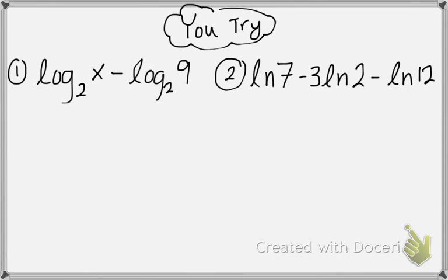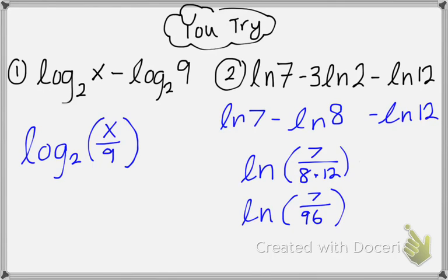Go ahead and pause the video and give these two problems a try — watch out for any coefficients before you condense. For number one, I used the quotient property and got log base 2 of x over 9. For number two, first you need to rewrite 3 natural log of 2 as natural log of 8. Then I can see that both my natural log of 8 and my natural log of 12 were negative, so both values ended up in my denominator.